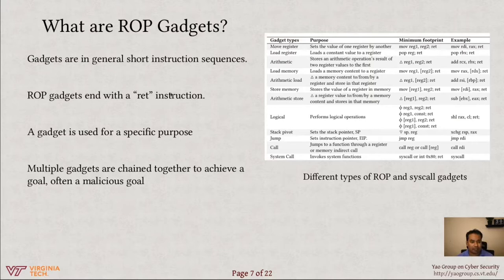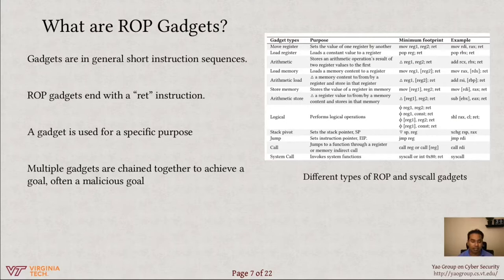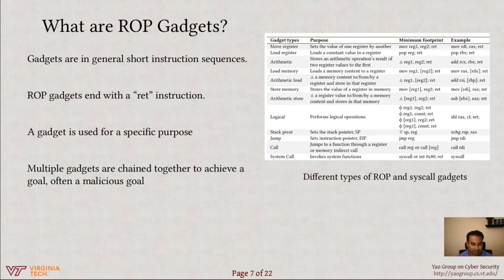Gadgets are short instruction sequences that do specific operations. For ROP gadgets, they end with a return instruction. These gadgets can perform operations like addition, subtraction, loading values from memory, storing values to memory — all sorts of operations. ROP gadgets are known to provide Turing-complete operations, meaning you can find all necessary gadgets to do Turing-complete computation. You can chain them together to achieve a goal, usually a malicious one. In the next slide, I'll talk about how attackers use ROP gadgets to achieve a malicious goal, for example to get a shell.